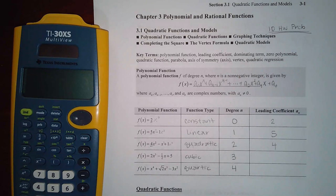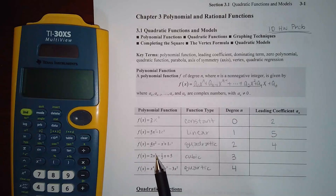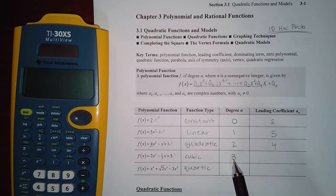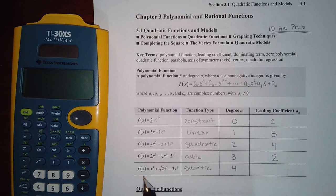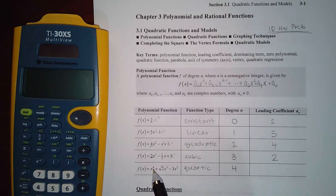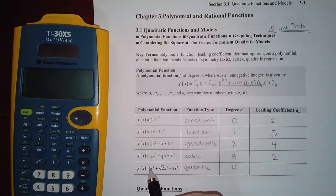The coefficient in front of the x-squared term for the quadratic example is four. When the highest exponent is three, the function is called a cubic, the degree is three, and the coefficient of the x-cubed term is positive two. When the highest exponent is four, it's called a quartic function, and the coefficient in front of that term is an invisible one.